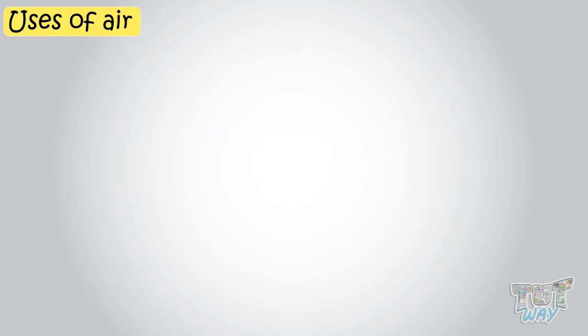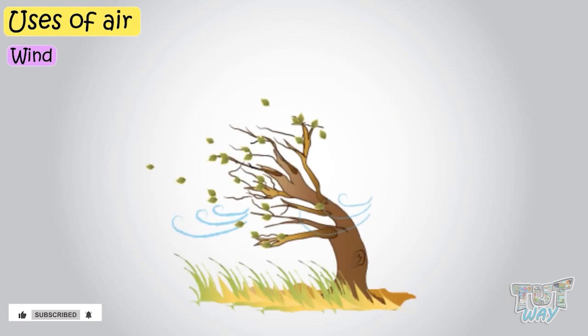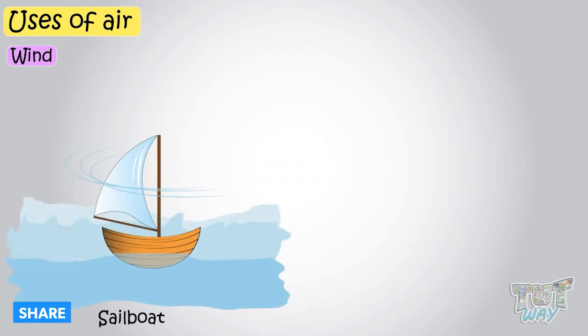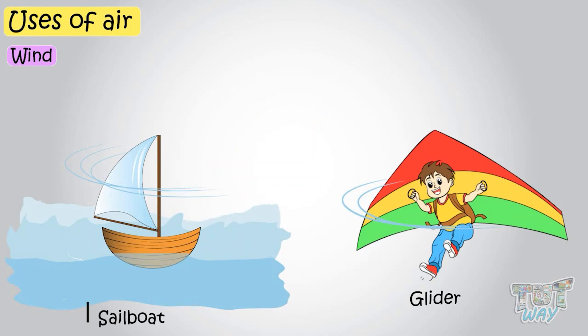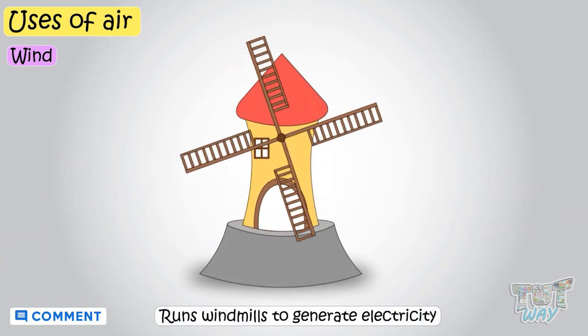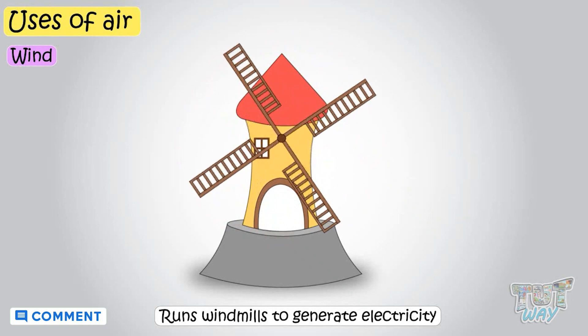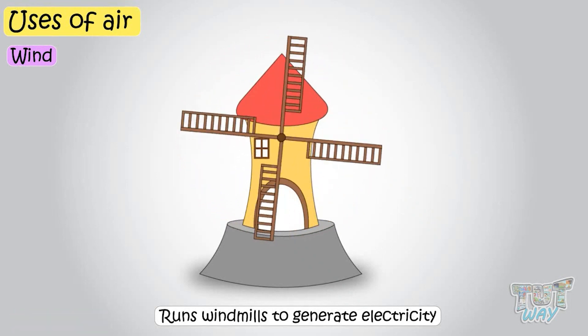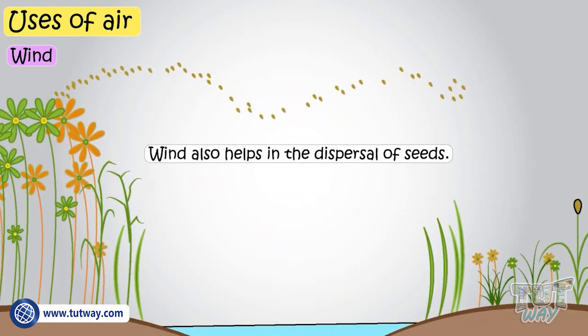Now let's see some uses of air and how air is important for us. Moving air, that is the wind, has great force. It enables the movement of sailboats and gliders. It runs windmills, which are used to generate electricity. Wind also helps in the dispersal of seeds.